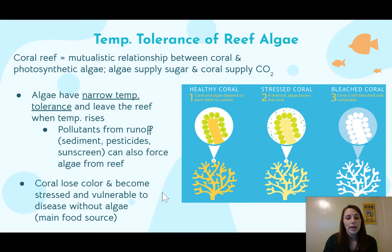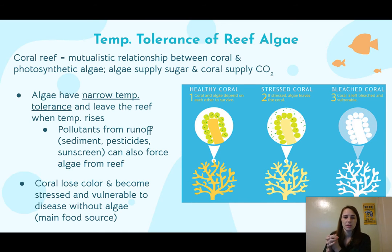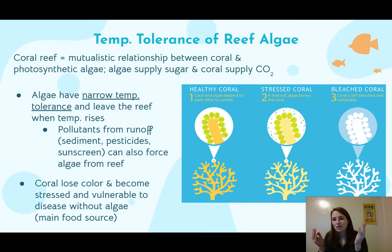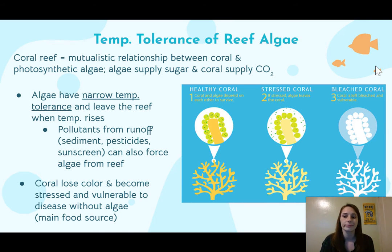Coral can lose their color and become stressed and vulnerable to disease without the algae. They are essentially going to end up starving to death because they don't have it, and they could also get disease more easily. Without the algae they're not going to be able to continue. When you see that bright white bleached coral, it's basically a goner.